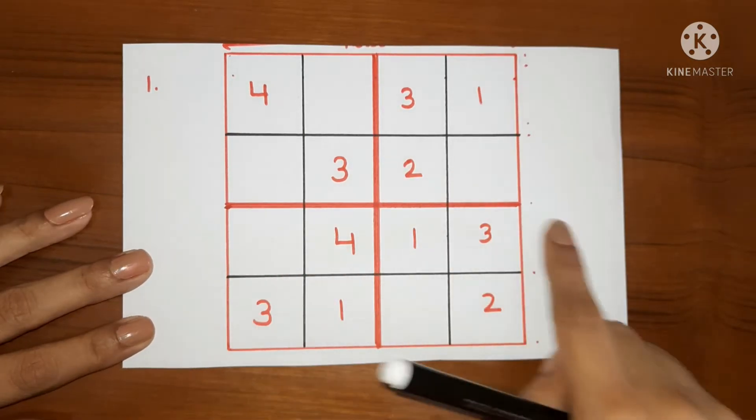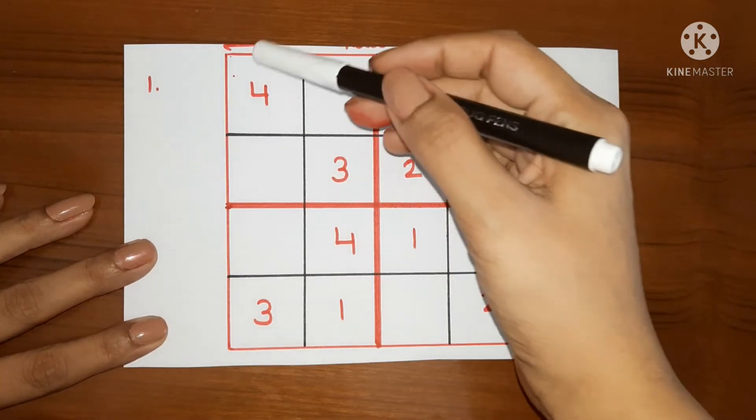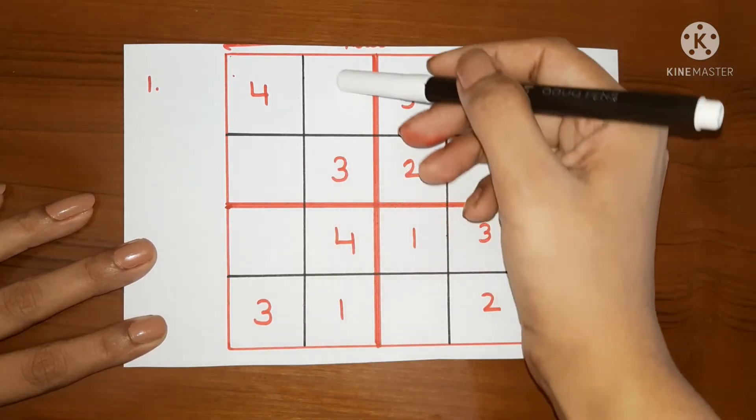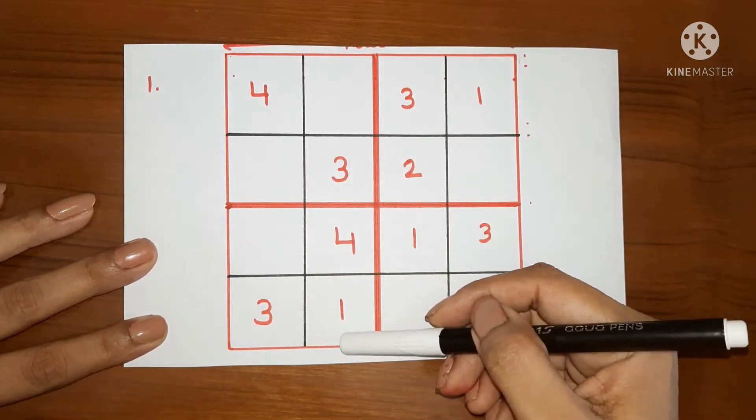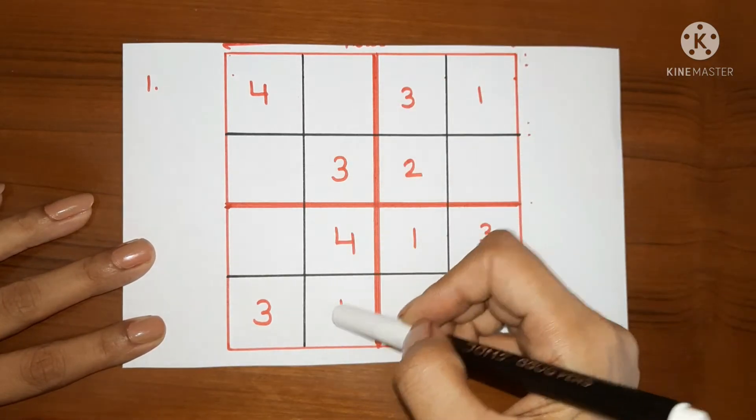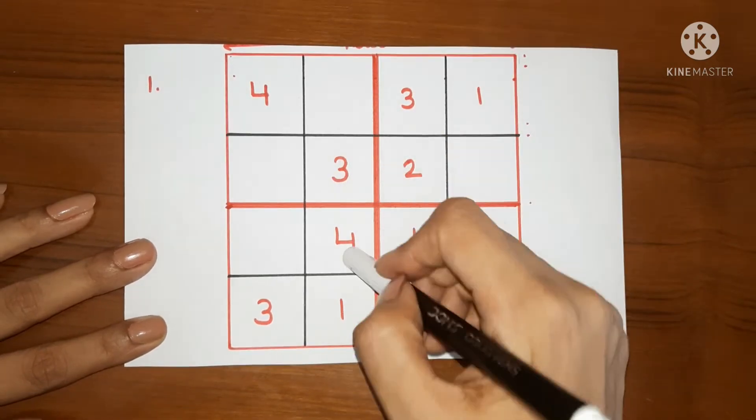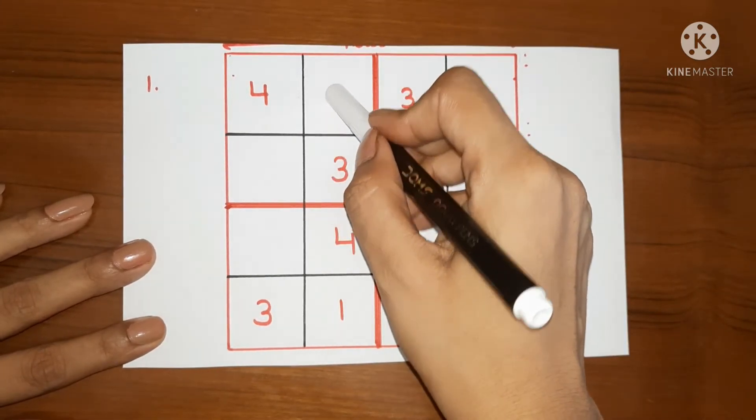Let's start with the easiest puzzle first. First of all, check the columns with the 3 numbers in it. As you can see here in this column, only 1 number is missing. So it will be easier for the child to identify this number as already 3 numbers are here. Only 1 number is missing and that is 2.